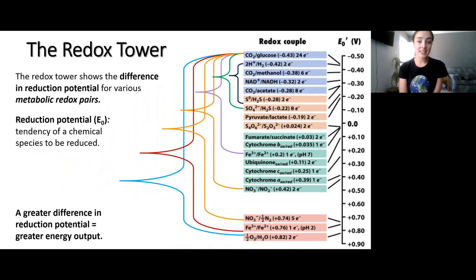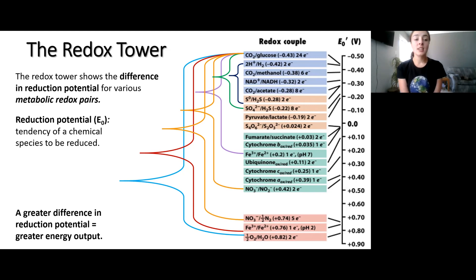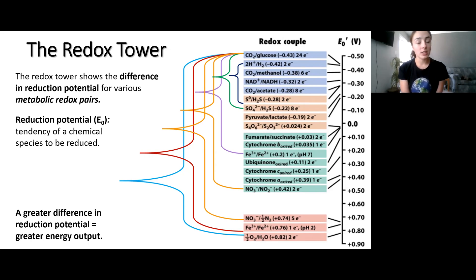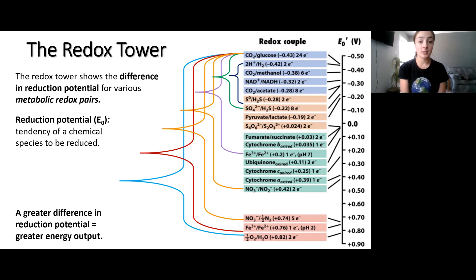This slide is about the redox tower. The redox tower shows the relative differences in reduction potential, or redox potential, of various metabolic redox pairs. Before I get to why that's important, reduction potential — the E value to the right of the redox tower — is the tendency of a chemical species to be reduced. This is important for our understanding of how much energy certain metabolic pathways will yield, and understanding the hierarchy of different microbial and biological communities.